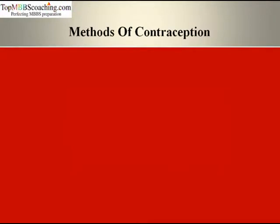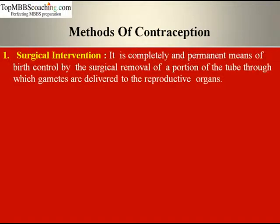Methods of contraception can be both natural and artificial to regulate birth control. The first method is surgical intervention. It is a completely permanent means of birth control by the surgical removal of a portion of the tube through which gametes are delivered to the reproductive organs. The failure rate of such approaches is 0%, but the disadvantage is that the person becomes permanently sterile.